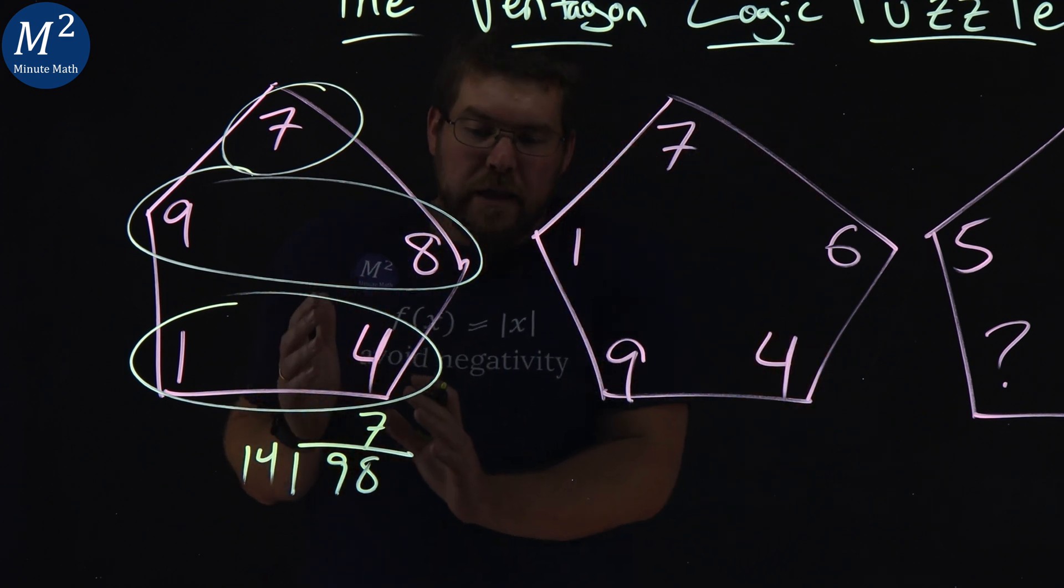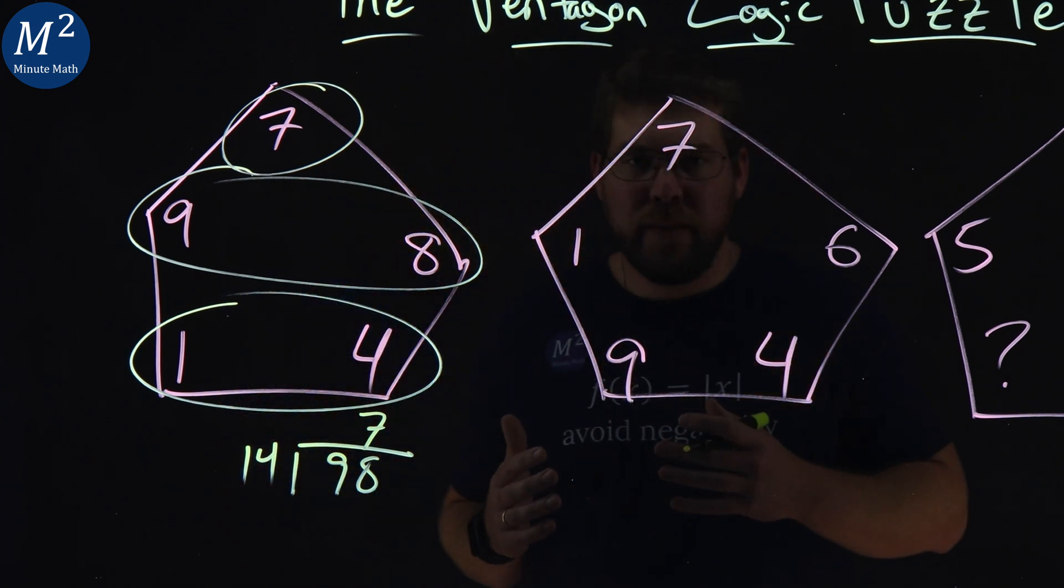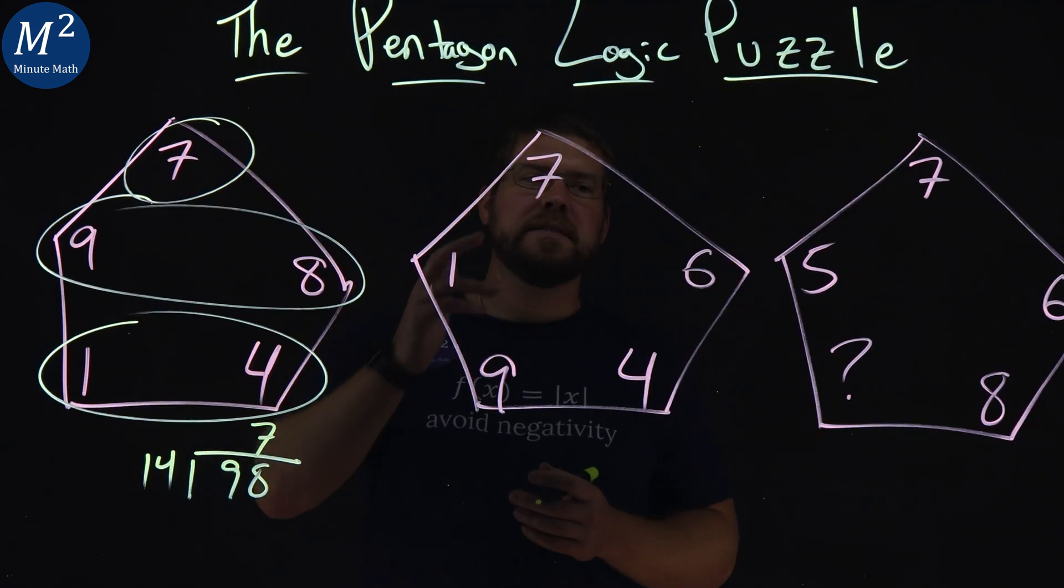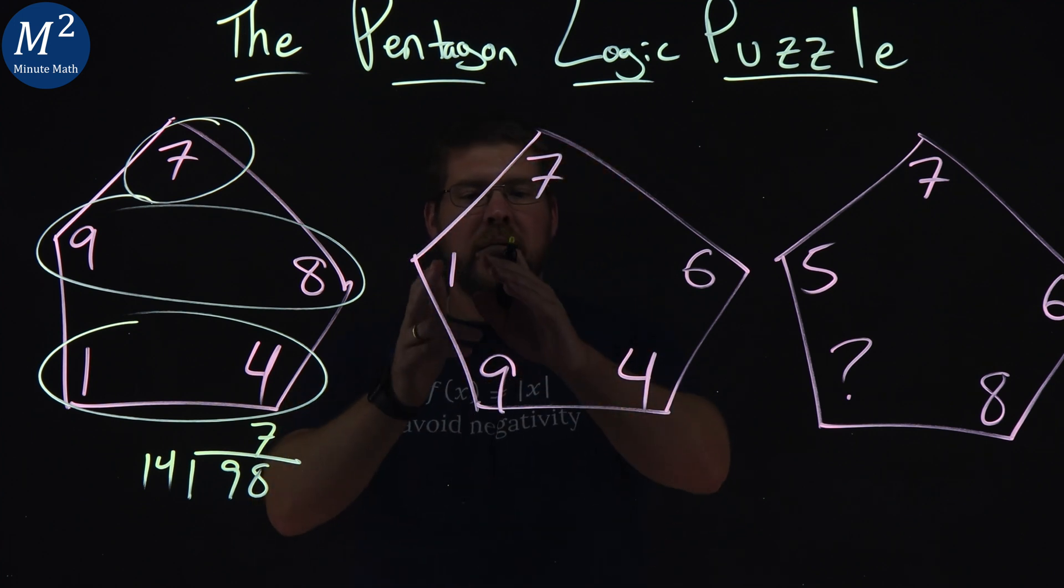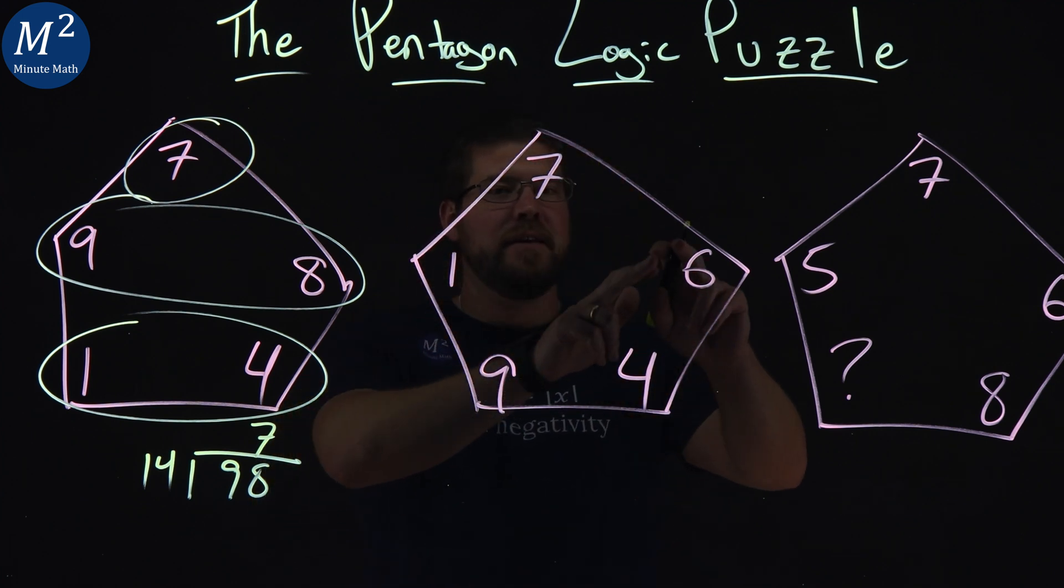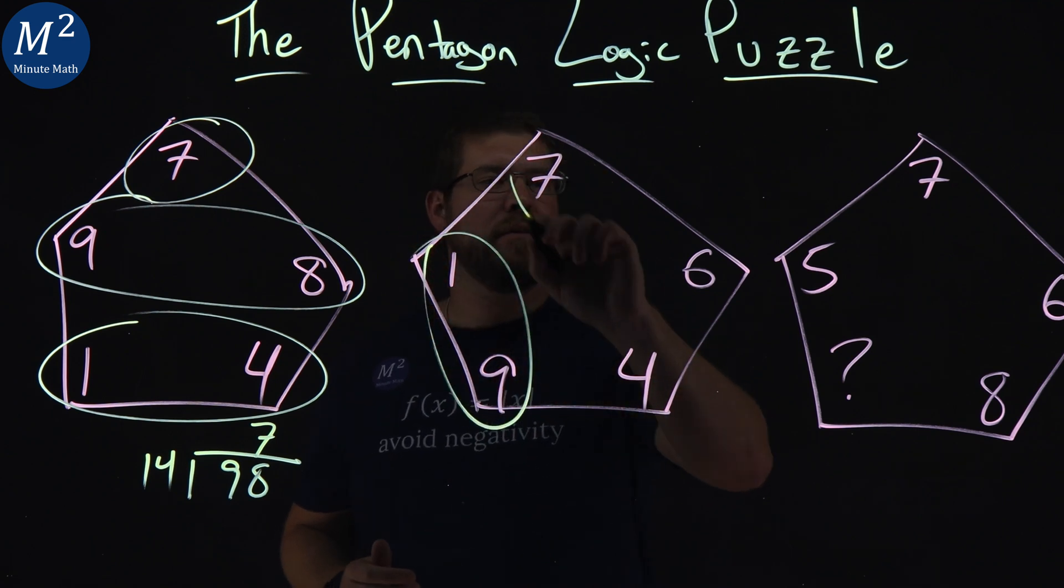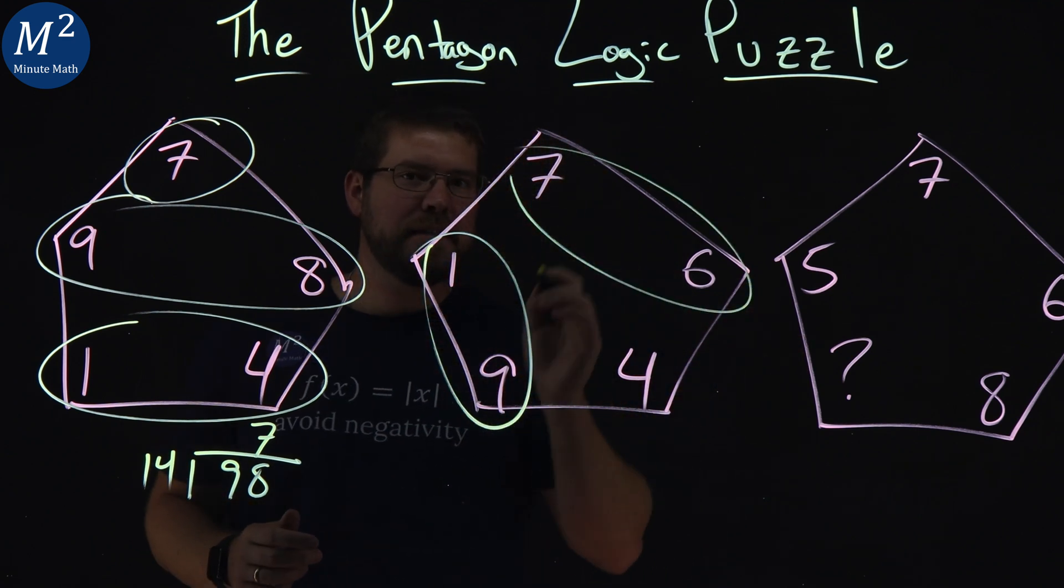Let's see if we can combine that or apply it to the middle pentagon. 1, 7, 6, 4, 9. 19 and 76. Let's look at those pairs here. 19, 76.